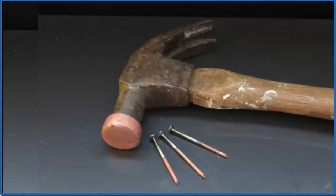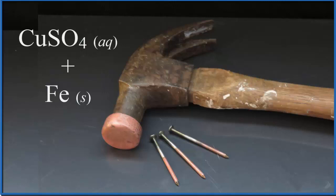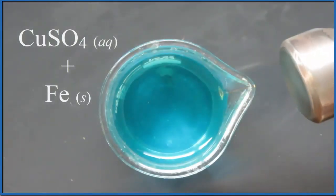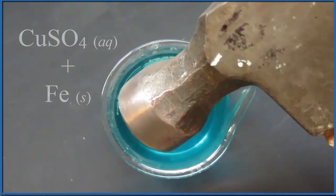Let's take a look at a classic single displacement reaction, copper 2 sulfate and iron. We're going to coat part of my hammer with solid copper. It's going to look really nice.